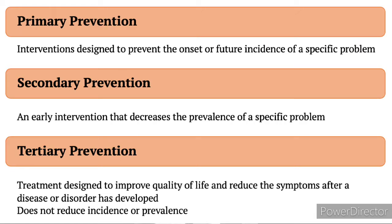Secondary prevention is the early diagnosis and prompt treatment of diseases before the disease becomes advanced and disability becomes severe. One of the most important secondary prevention measures is health screenings. Tertiary prevention's goal is to retrain, re-educate, and rehabilitate the patient who has already incurred a disability. Tertiary preventive measures include those applied after significant pathogenesis has occurred. Therapy for a heart patient is an example of tertiary prevention.